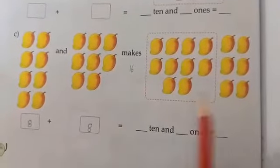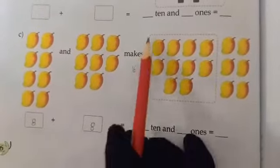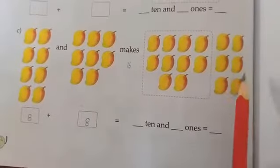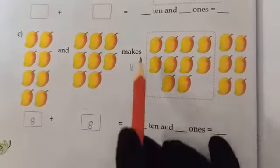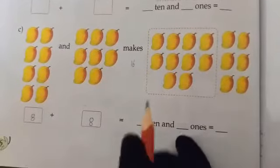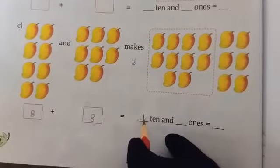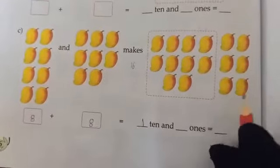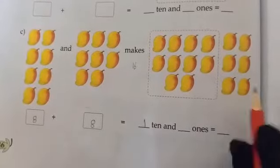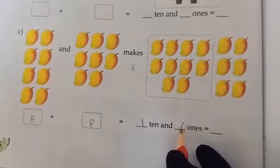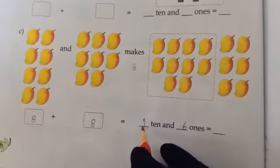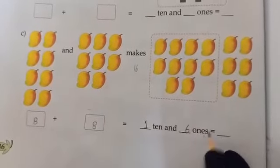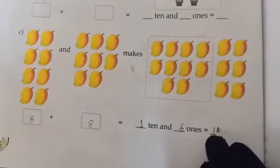Now you have to make this 10 group and 1s group. Now how many 10s are here? Only 1 ten. So write 1 ten and how many 1s are here? 1, 2, 3, 4, 5, 6. So 6 ones. So 1 ten and 6 ones makes 16.